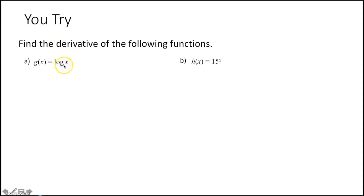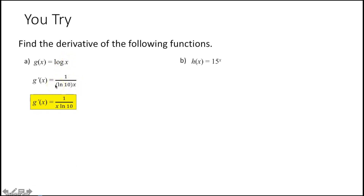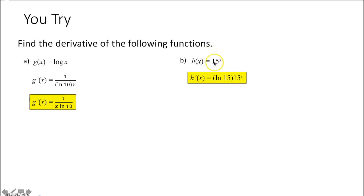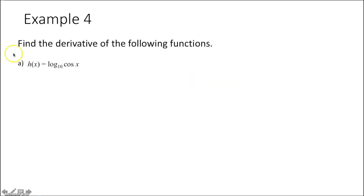You try: derivative of log base 10 of x is 1 over (ln(10) times x). Rewrite x out front and we're done. Derivative of 15^x: when we have a^x, the derivative is ln of the base times the same thing, so it's ln(15) times 15^x.